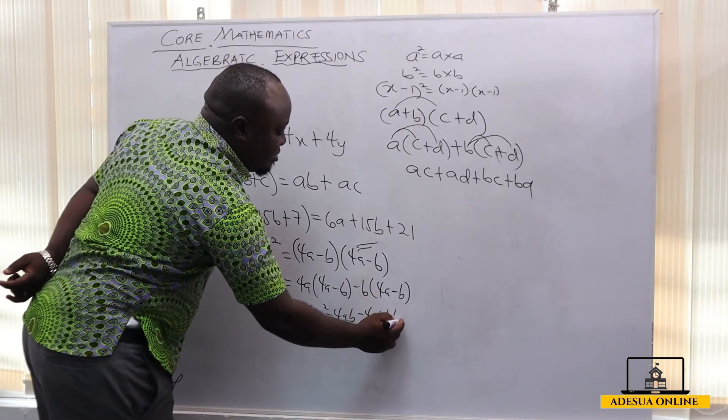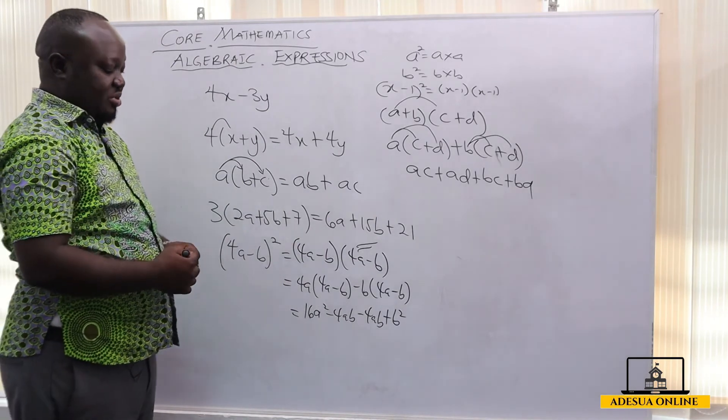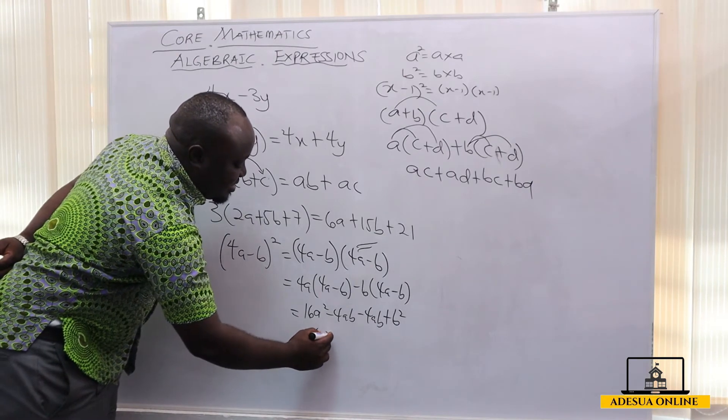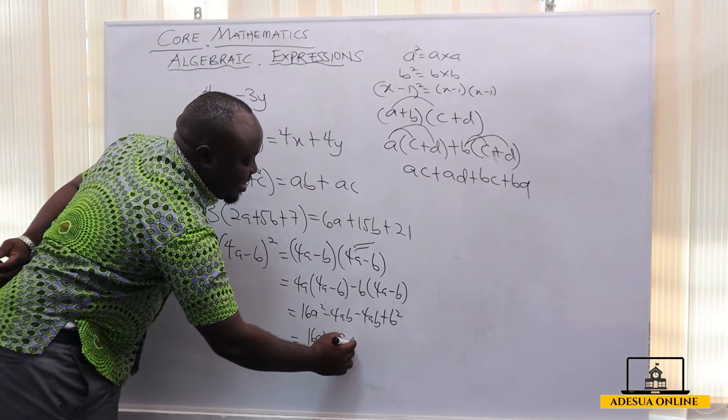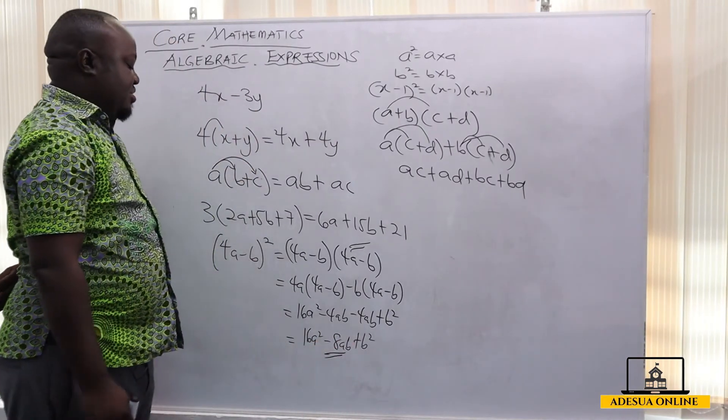Then minus b again, and then plus b² because negative and negative is positive, so b times b is b². This is going to give us 16a² minus 8ab plus b². So that is the expansion of 4a minus b all squared.